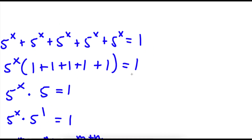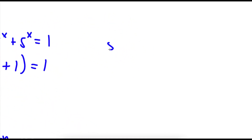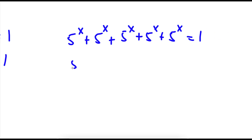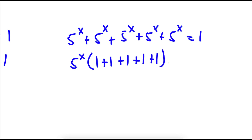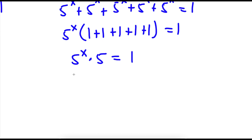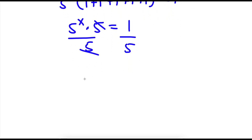Now another way of doing this problem: we have 5 to the power of x plus 5 to the power of x plus 5 to the power of x plus 5 to the power of x plus 5 to the power of x is equal to 1. So again, I'm going to start by factoring out 5 to the power of x. So now I have 5 to the power of x times 5 is equal to 1. Now, instead of multiplying these two, I'm going to divide both sides by 5. So these two will cancel out, and I'm left with 5 to the power of x is equal to 1 over 5.